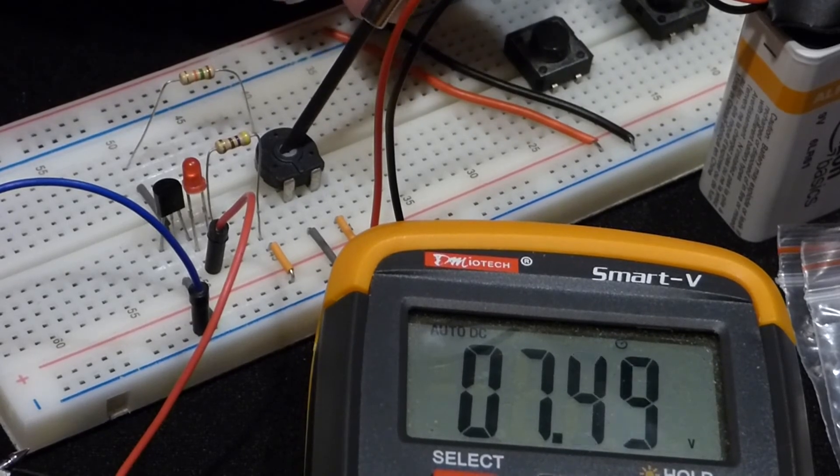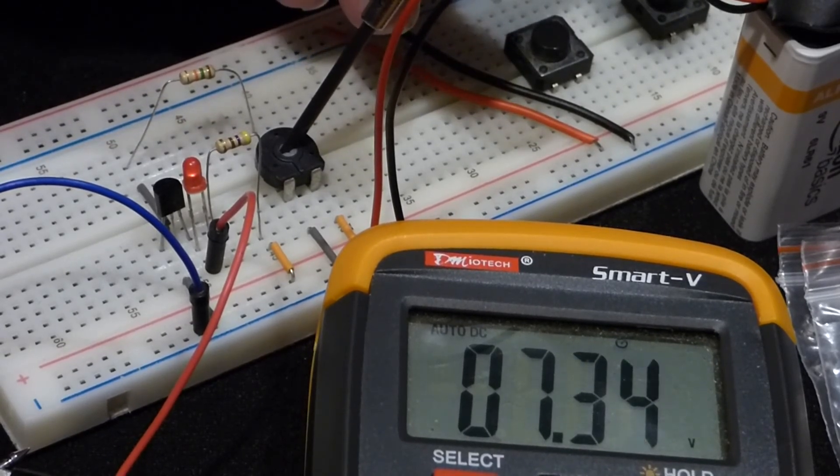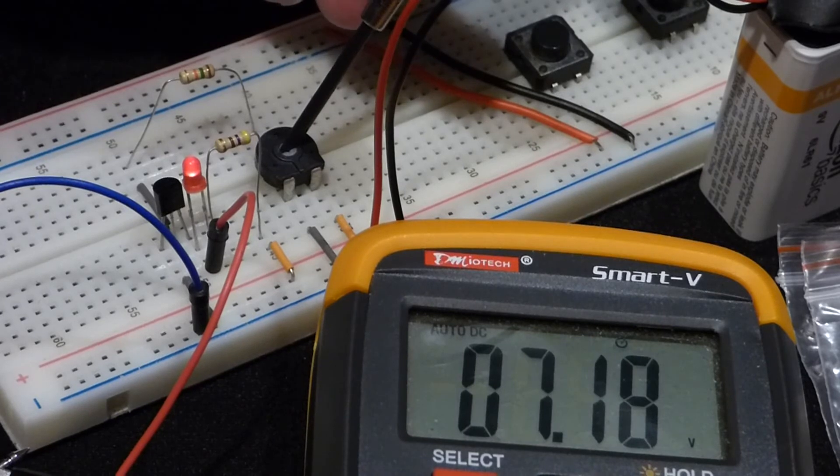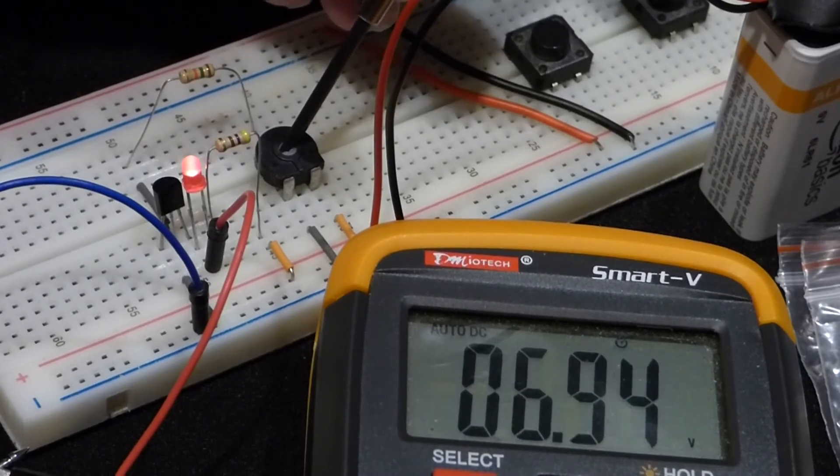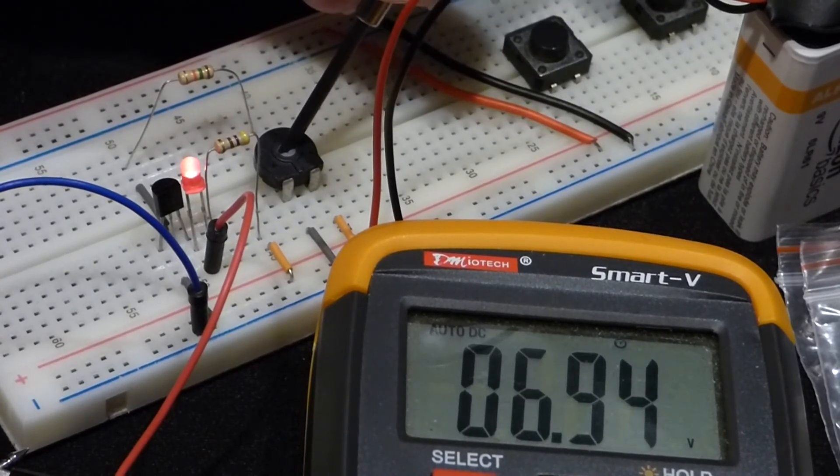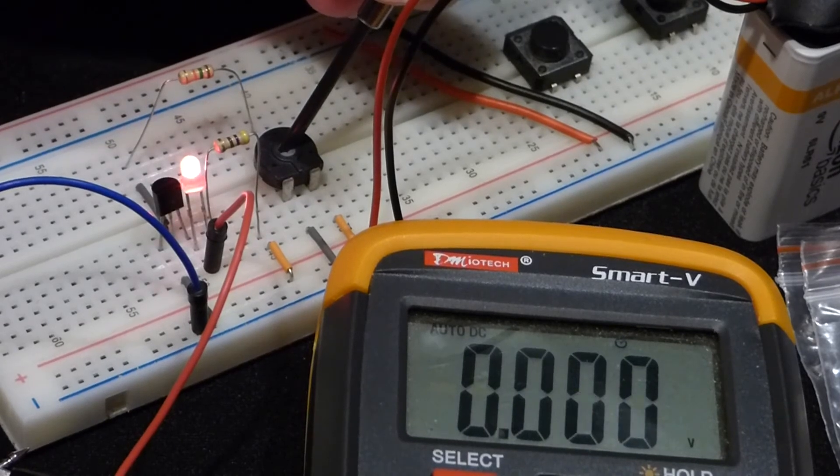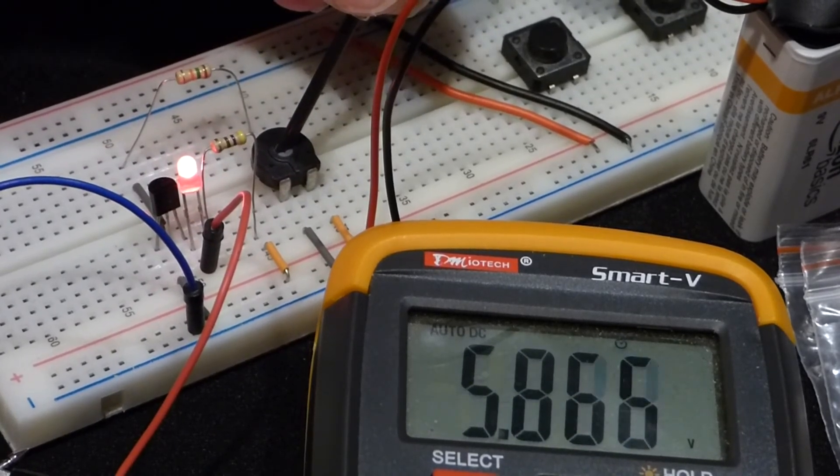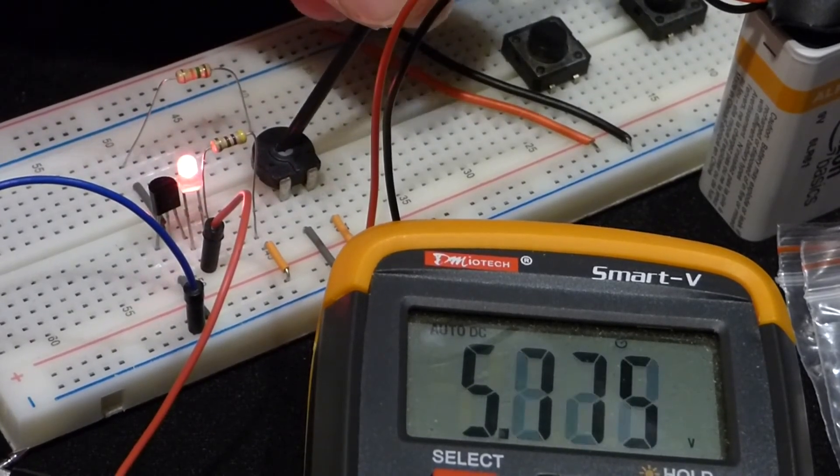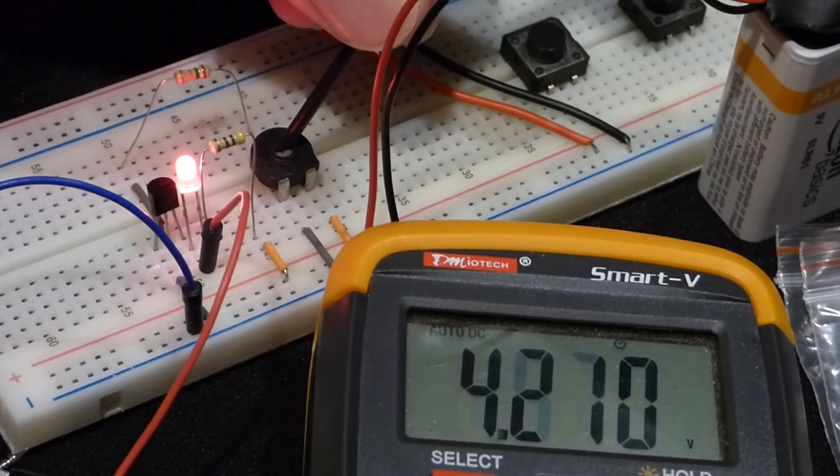We're going to turn it up until the transistor starts conducting a little. As I just showed in the last clip. And now you can see once it starts conducting, voltage drops rapidly. That's because current is passing through the transistor easier. And so it can't build up a voltage.